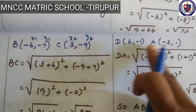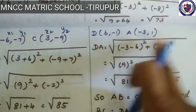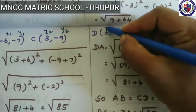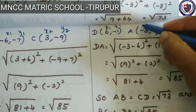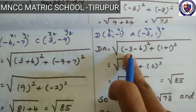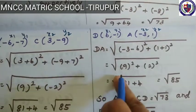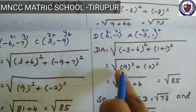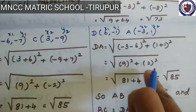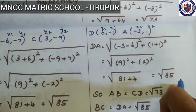Next, value of DA. D is (6,-1) and A is (-3,1). DA = √[(x2-x1)² + (y2-y1)²] = √[(-9)² + (2)²] = √[81 + 4] = √85.